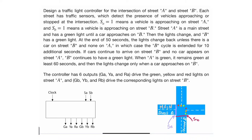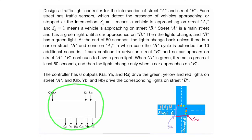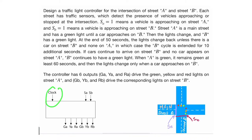The traffic light controller controls the red, yellow, and green signals for both street B and street A. This block diagram shows the whole controller — it takes a clock and inputs from the sensors, and outputs green, yellow, and red for street A, and similarly green, yellow, and red for street B.